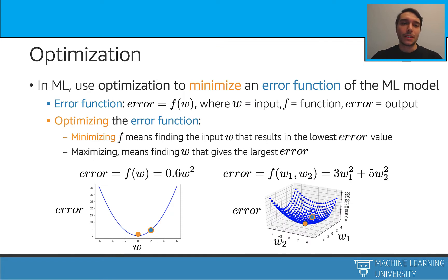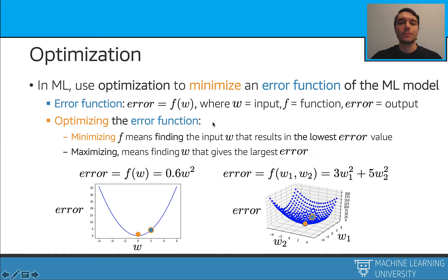Let's make some definitions. When we are using optimization in machine learning, we usually try to minimize some functions. These functions are usually error functions or cost functions. We can write it down like f of w, where f is the function and w is the input. When we are optimizing this function during the minimization, we try to find the w that's going to give us the least amount of error.